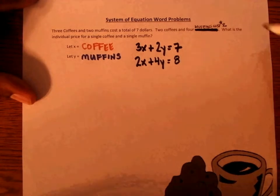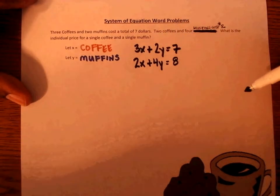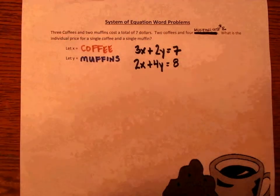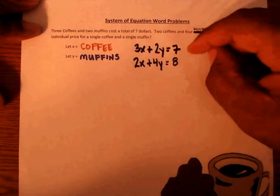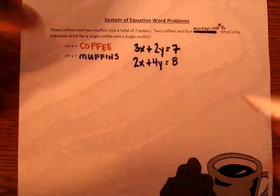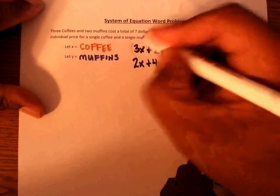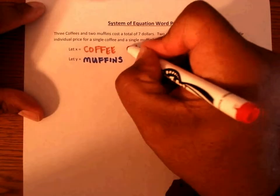To solve a system of equations, we have to eliminate one of the variables. In order to eliminate a variable, we have to make the variables match. In this case, it's easier to match the Y's because all we need to do is multiply our first equation by two.